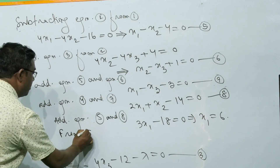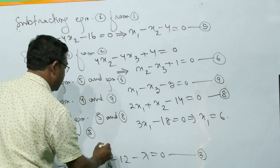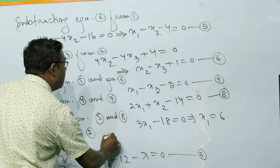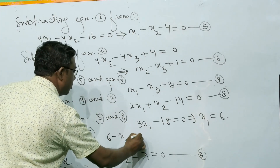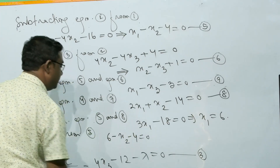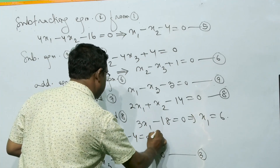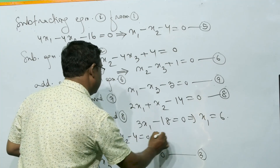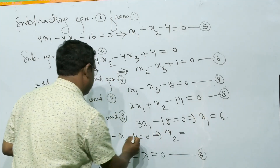From equation 5, putting x1 = 6: 6 − x2 − 4 = 0, so x2 = 2.